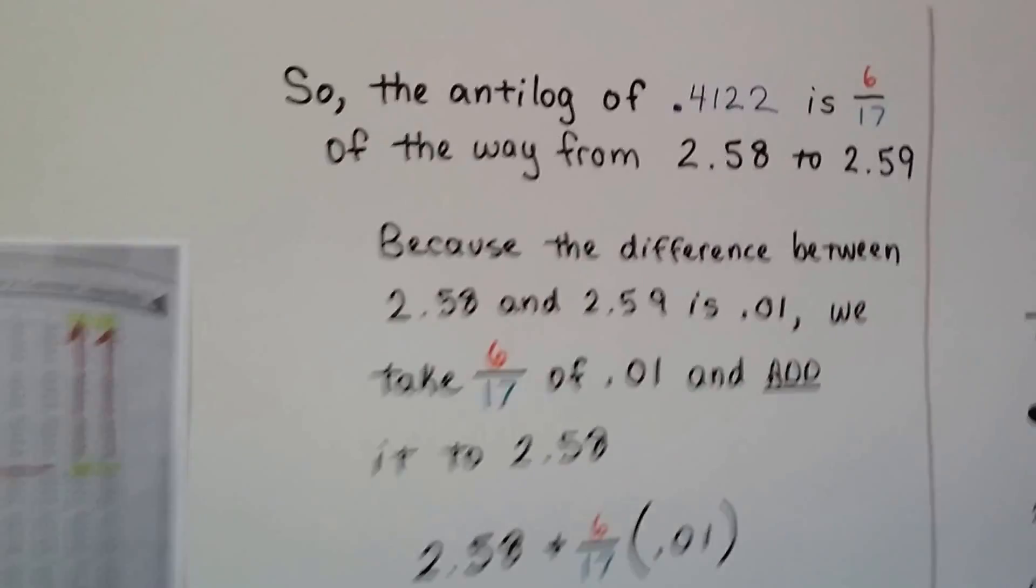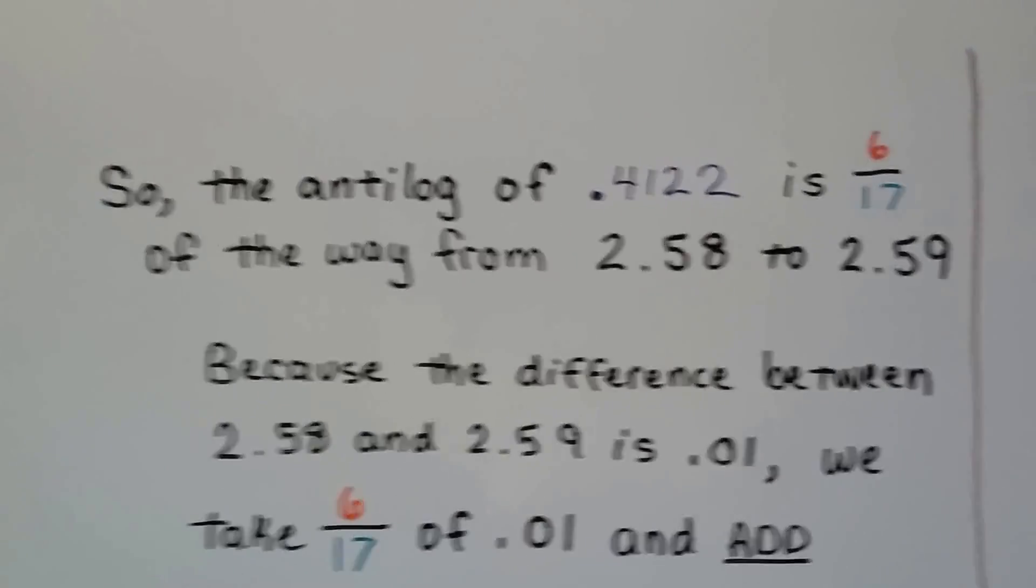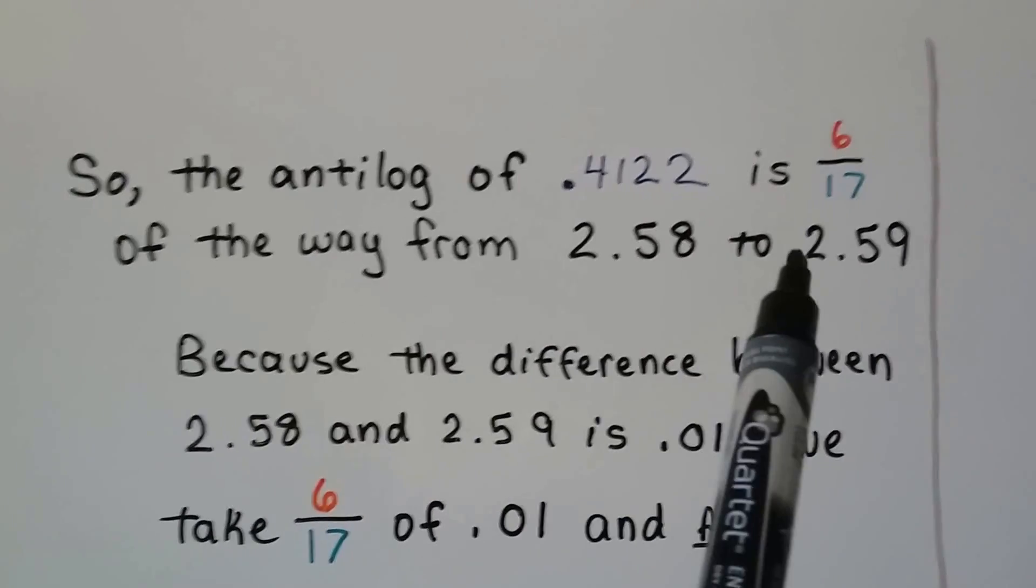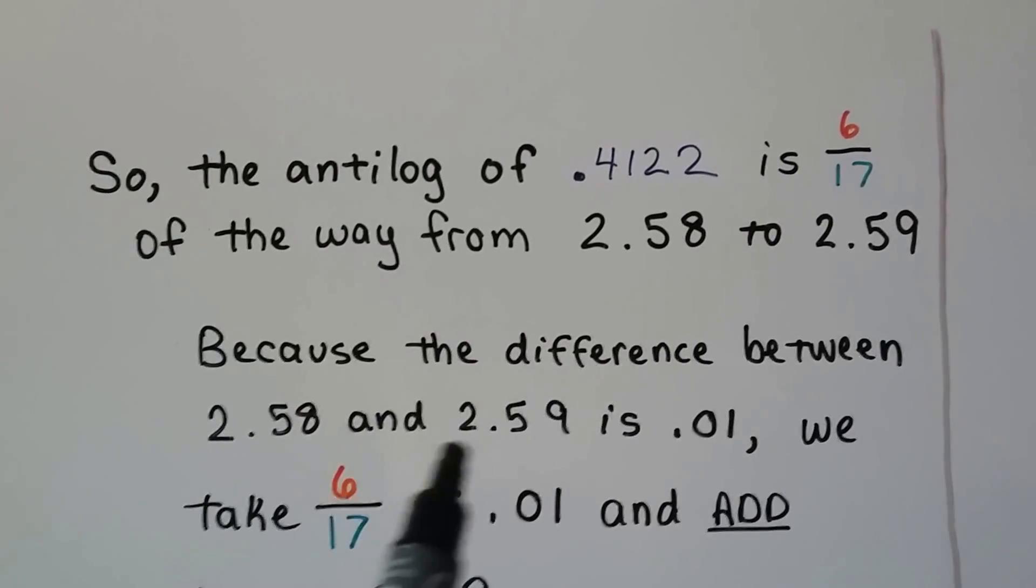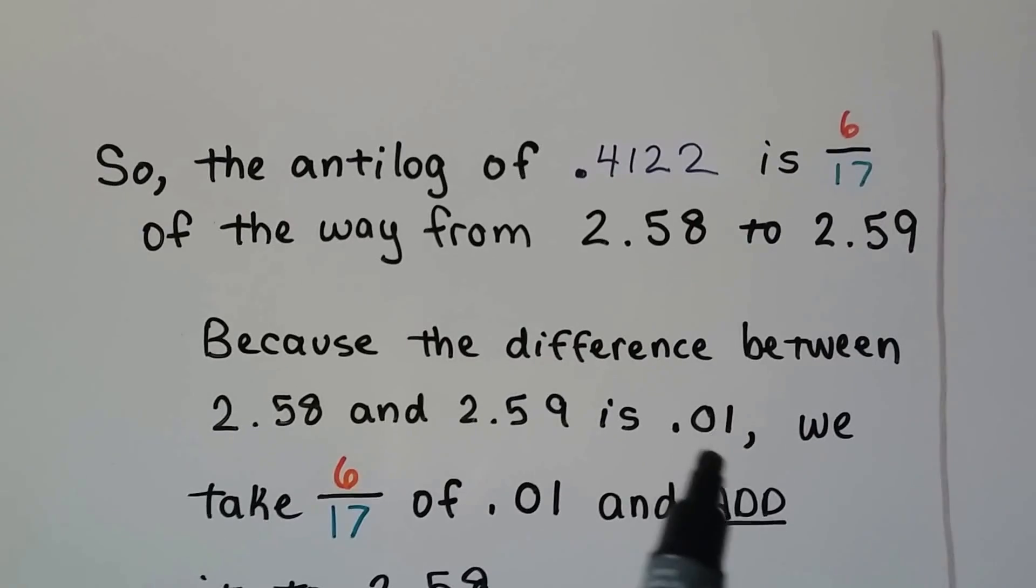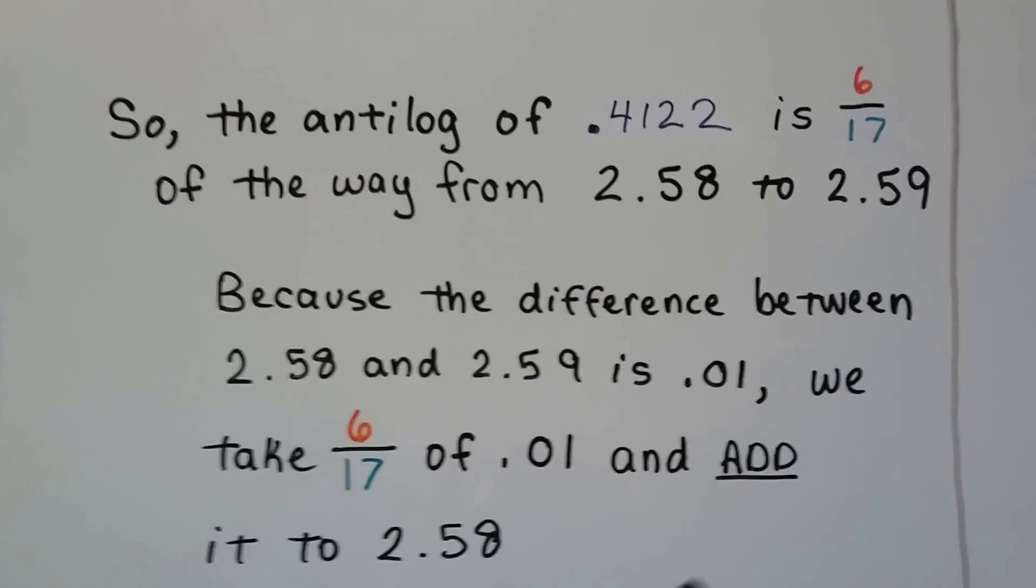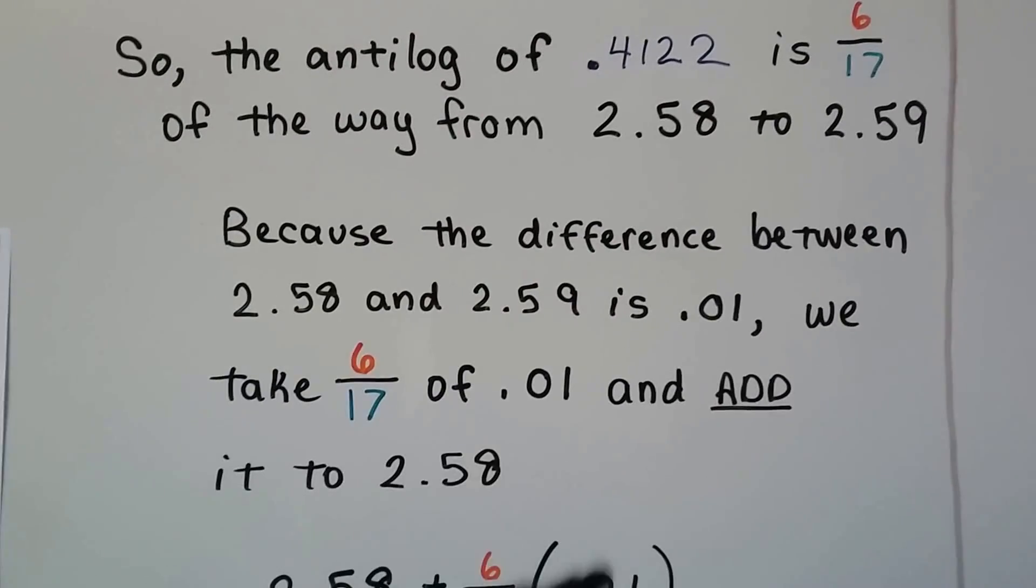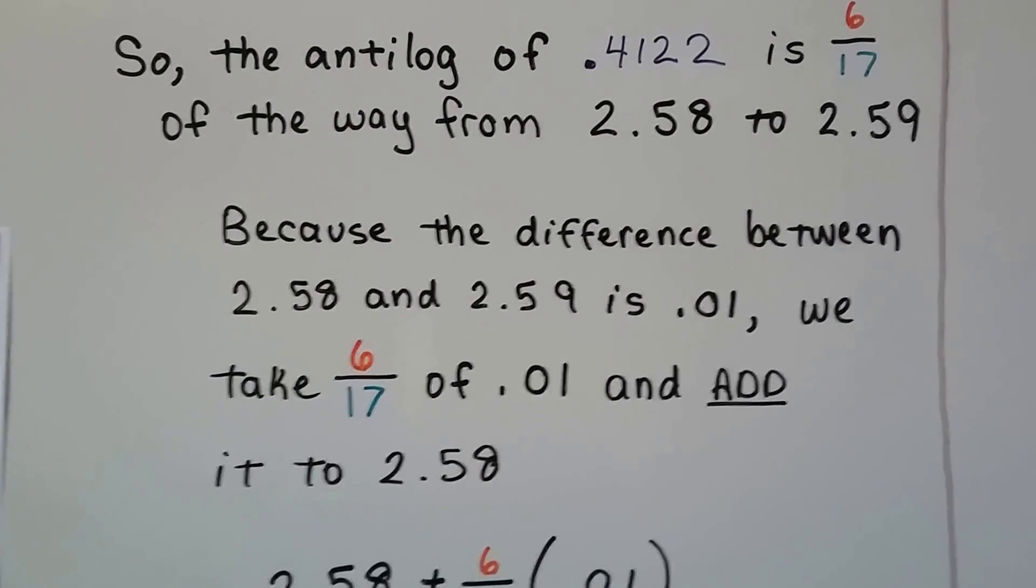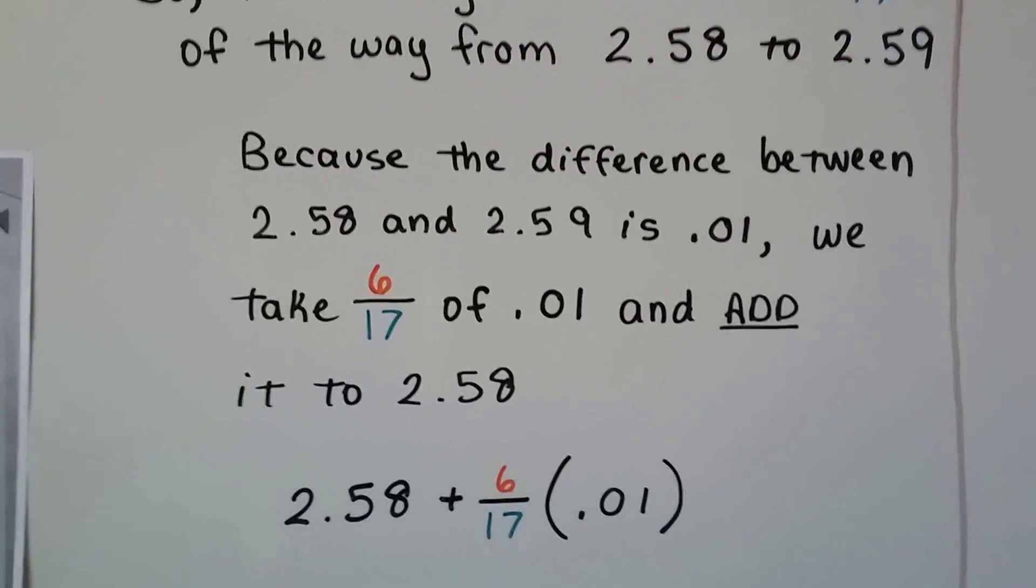Alright, so the anti-log of .4122 is 6 seventeenths of the way between 2.58 and 2.59. Now, because the difference between 2.58 and 2.59 is .01. There's just a little .01 difference. We take 6 seventeenths of .01 and add it to 2.58. You'll really understand this if you saw the previous video.